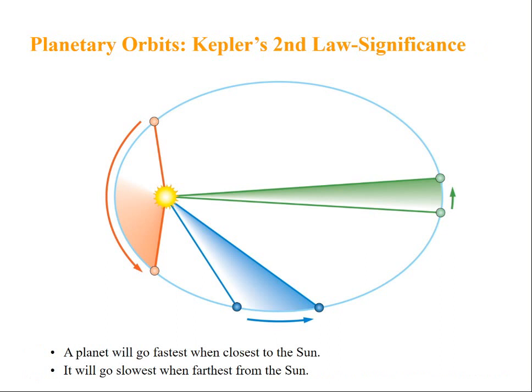The significance of Kepler's second law is that a planet will go fastest when closest to sun and it will go slowest when farthest from the sun.